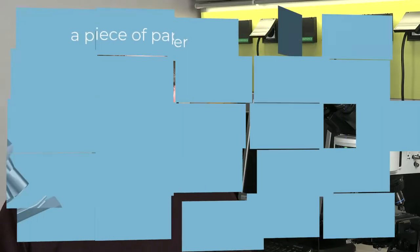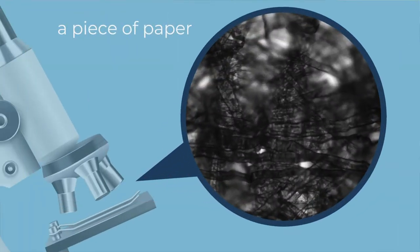Modern optical microscopes can magnify up to 2000 times the object size. For instance, this is what a tiny piece of paper looks like under the microscope. Can you imagine what a wonderful world can be found using this equipment?